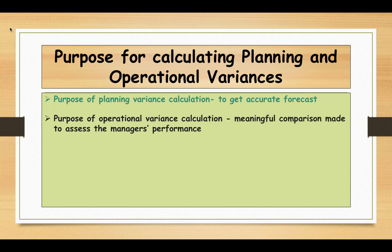Now we will see the purpose of operational variance calculations. These are the best measures to assess departmental or divisional managers' efficiency depending on market conditions at the time. However, divisional managers' performances should not be assessed in isolation. For example, if the material price variance is favourable, the manager might have bought cheap quality material, but the usage variance could then be adverse. So you should see the interrelationship between the variances.